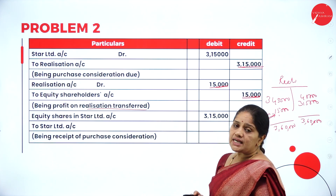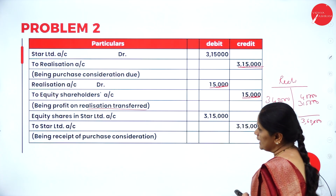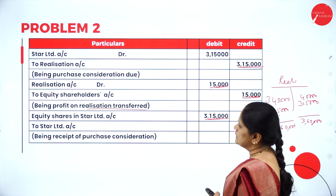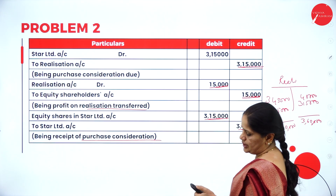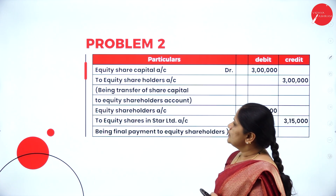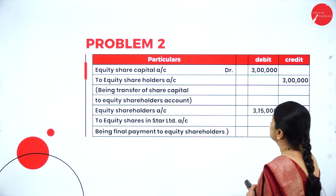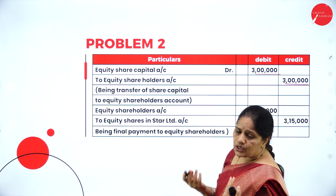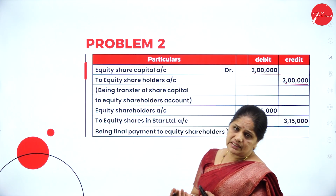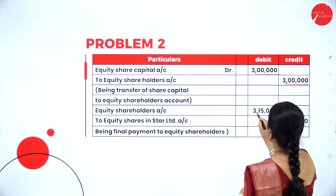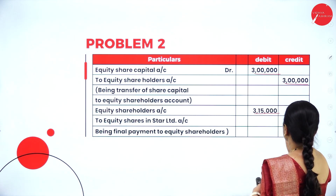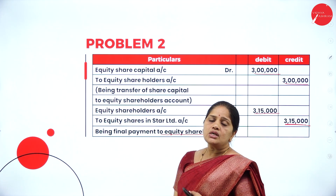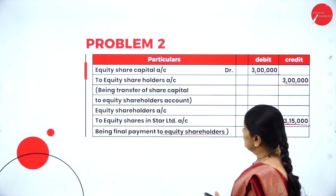There is a profit for Moon Company but a loss for Sun Company. Equity shares in Star Limited account debited 3,15,000 to Star Limited account 3,15,000, being receipt of purchase consideration. Share capital account debited 3,00,000 to equity shareholders account 3,00,000, as there are no other funds in Moon Limited. Then equity shareholders account debited 3,15,000 to equity shares in Star Limited 3,15,000, being final payment made to equity shareholders.